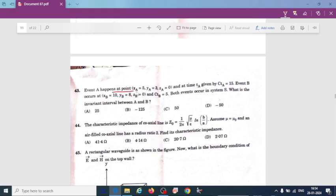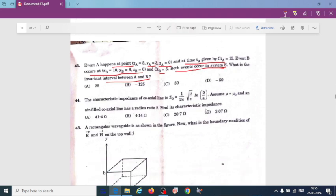Event A happens at point x equal to 5, y equal to 3, z equal to 0, and at time t A that is equal to 15. Event B occurs at the given condition and time t B is equal to 5. Both events occur in the system S. So event A and B both are going to exist in this system. What is the invariant interval between A and B? So the answer is going to be 50. So you can just take this option C.